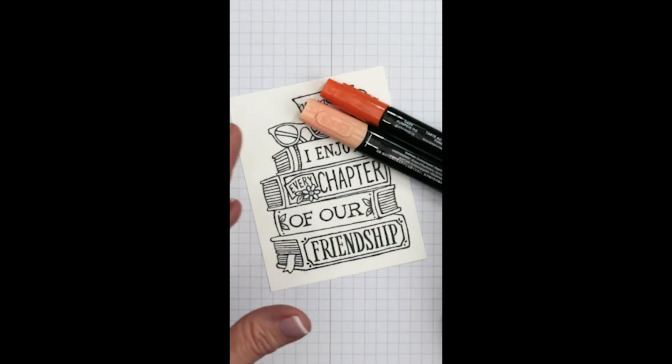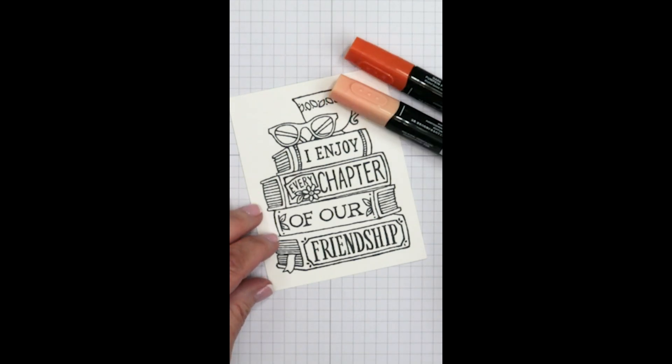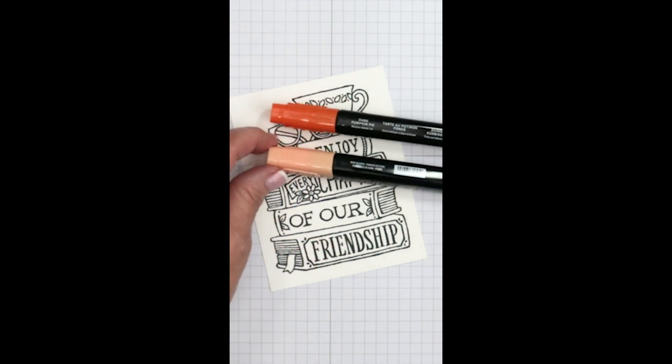Stampin' Blends markers provide beautiful professional results with an alcohol-based color pigmentation. They come in both light and dark shades and are dual-ended.